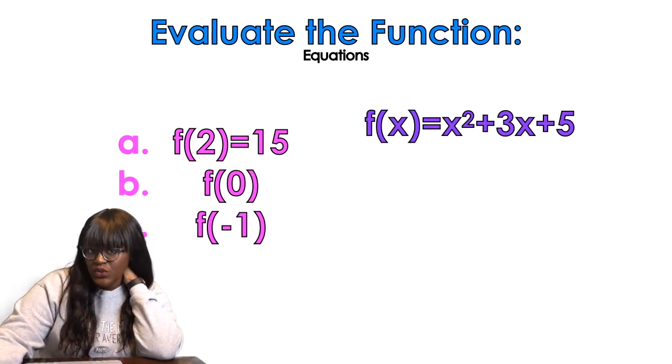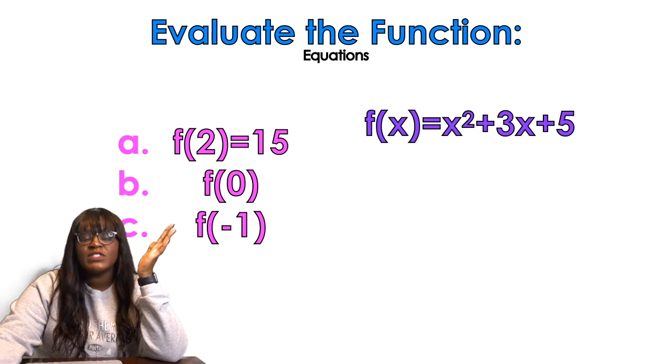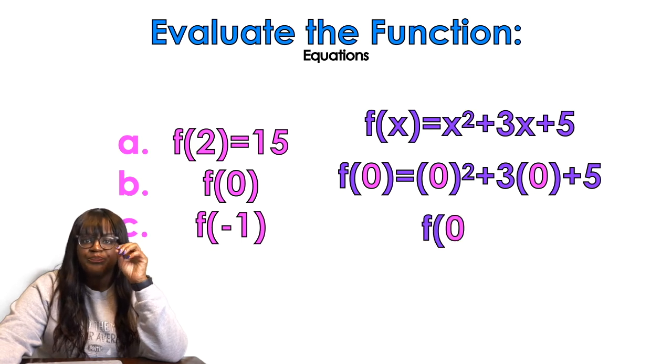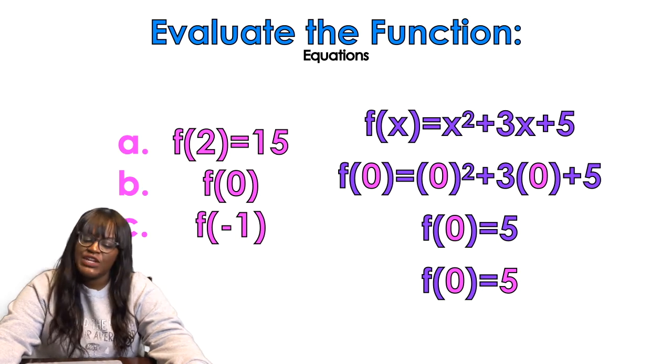So next, we're going to do f(0). We love plugging in 0. You want to know why I love plugging in 0? Because when I plug in 0, mostly everything goes away. 0 squared is 0, 3 times 0 is 0, and that gives me 5. So f(0) equals 5. That's the proper notation for that.